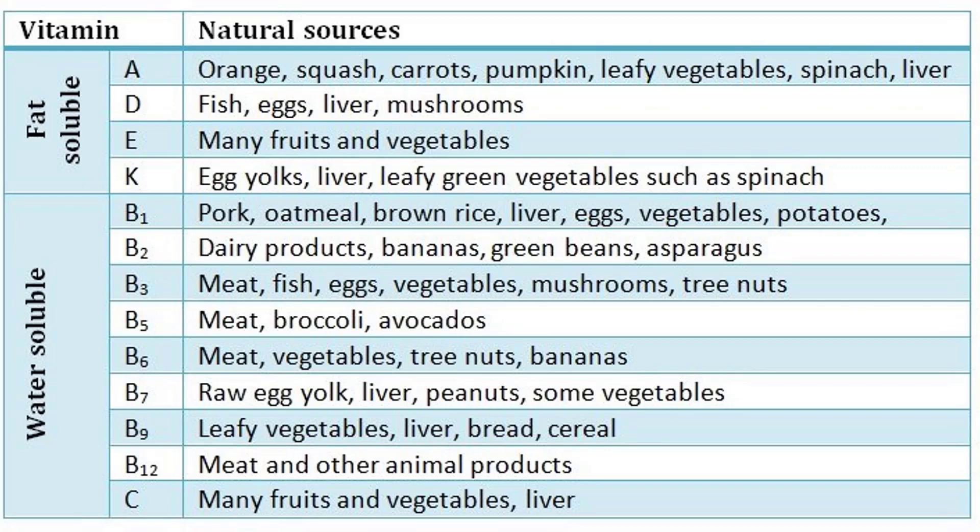Now for water soluble vitamins — vitamin C and all vitamin B. First, vitamin C: it is easy to remember. The sources are many fruits, vegetables, and liver — remember FVL: F for fruits, V for vegetables, L for liver. Then for vitamin B — we have B1, B2, B3, B5, B6, B7, B9, and B12. Note that B4 and B8 are eliminated. You can remember: 4 plus 4 is 8, so both 4 and 8 are removed.